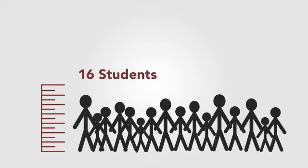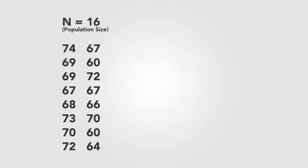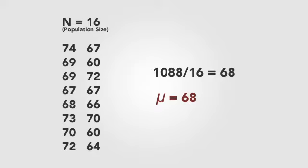Let's say we want to measure the heights of 16 students. Here are the heights in inches of all 16 students. And we can easily get a mean for this population by adding them up and dividing by the population size of 16. In this case, the population mean is 68 inches.